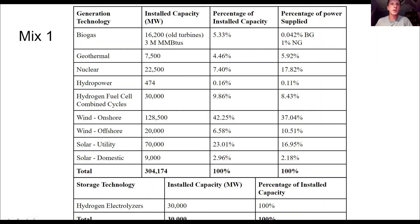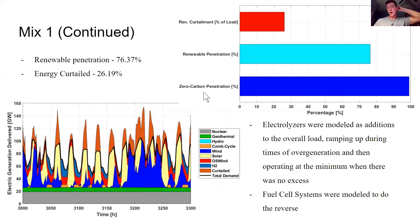Moving on to Mix 1, we wanted to make it relatively similar to what we would expect in the ERCOT region in the future — a lot of wind and solar with a little bit of everything else. We have about 50% installed wind, 25% installed solar, and 25% everything else. This mix achieves 99% zero carbon penetration, 76.37% renewable penetration, and a curtailment level of 26.19%. Overall, this mix performs relatively well and suits the needs of the ERCOT region.